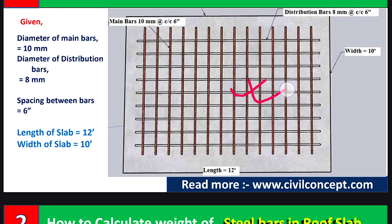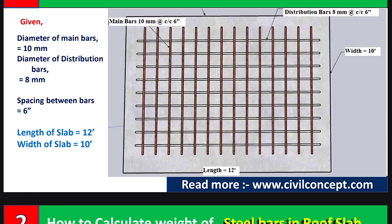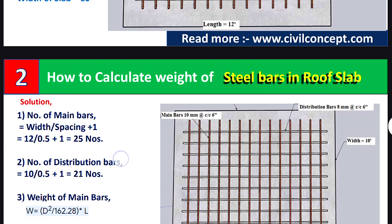So let us calculate the total quantity of steel required for this 10 feet by 12 feet slab. Given: diameter of main bar is 10 mm, diameter of distribution bar is 8 mm, spacing between bars is 6 inches in both directions, length of slab is 12 feet, and width of slab is 10 feet.